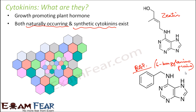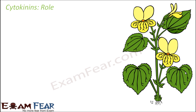The natural cytokinins, for example zeatin, are synthesized in those regions where rapid cell division occurs. Some regions in a plant where rapid cell division occurs are the apical regions, the root apices, or in the young fruits, where fast cell division occurs and the fruit grows bigger in size and matures. These are some of the regions where a lot of cytokinins are synthesized.